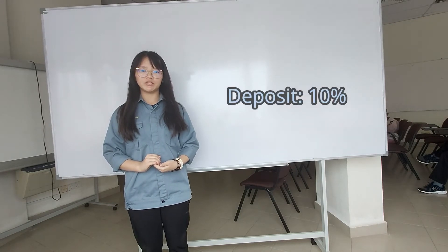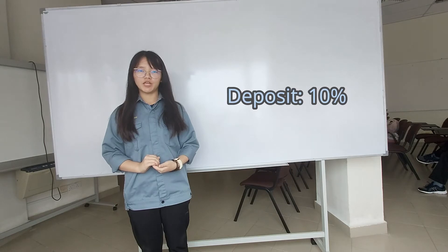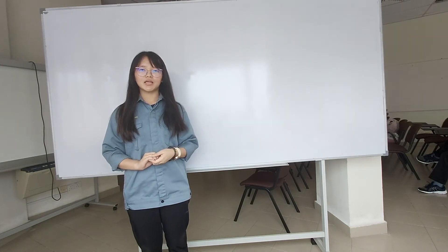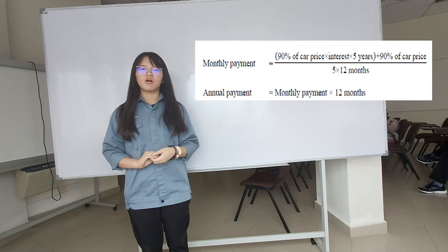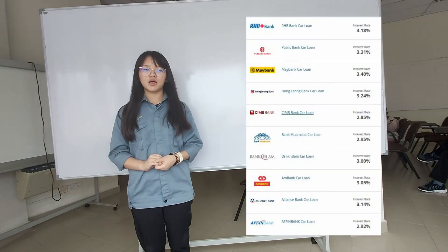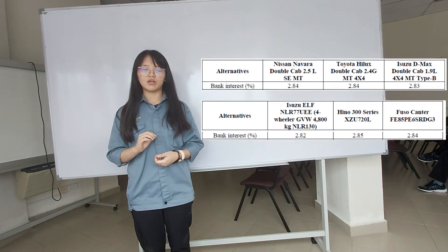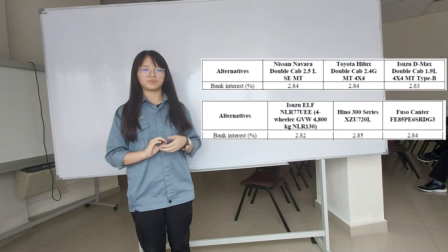By using a 10% deposit, the deposit for each vehicle is as shown here. Next is to calculate the monthly payment and annual payment, using the formula shown. For the interest rate, it differs according to the type of bank. Taking into account advice from an expert at a local bank, the interest rate used is as shown here.